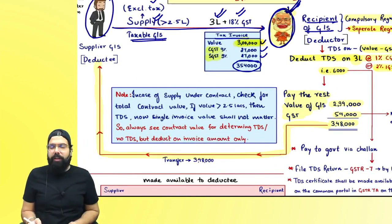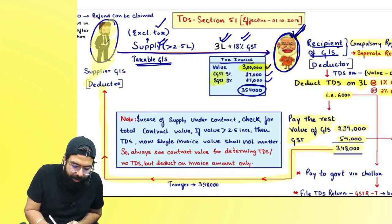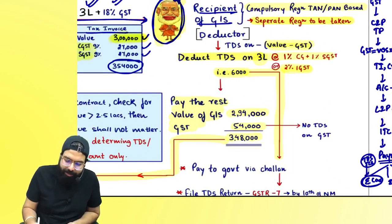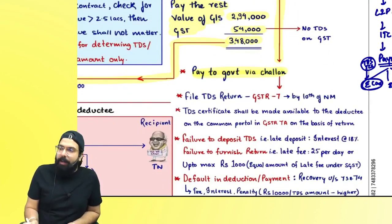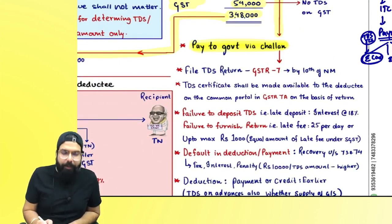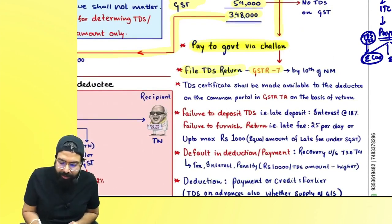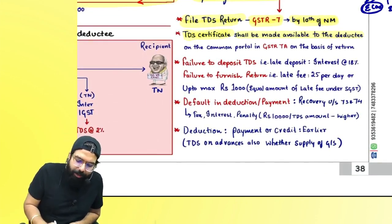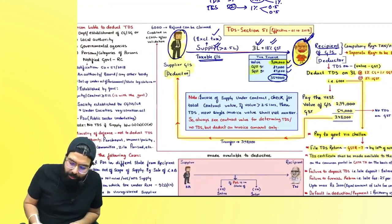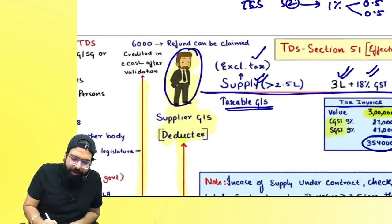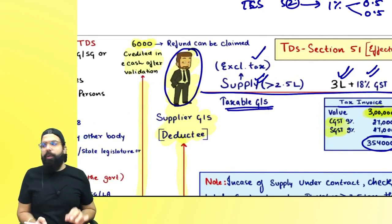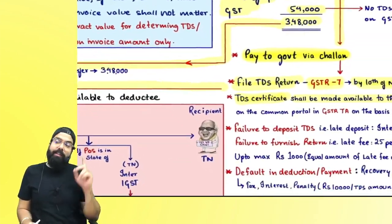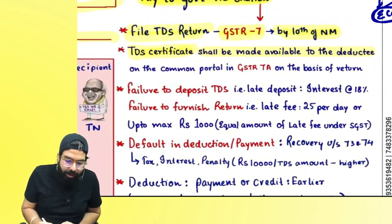The remaining amount — ₹3,48,000 — is paid to the supplier. The supplier queries the missing ₹6,000, which the government department deposits to the government by challan. When the government department makes the payment, it also files a return: GSTR-7, due by the 10th of the next month. A TDS certificate is made available to the deductee. The ₹6,000 is credited to the deductee's e-cash ledger, and the deductee can also claim a refund under Section 54.